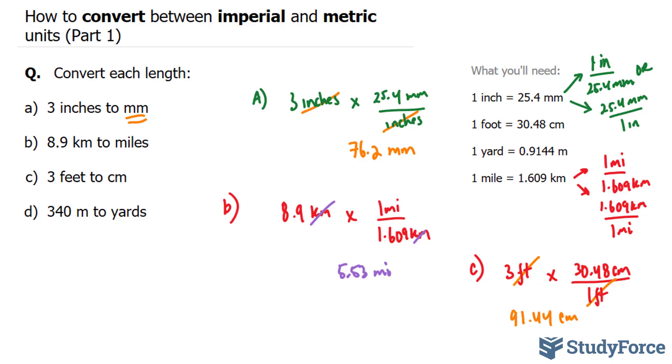Let's move on to D. In D, they want us to convert 340 meters to yards. To do that, we'll use this conversion ratio. Which version will you use? The one where you have the meters at the top or the meters at the bottom? The one with the meter at the bottom is the correct one. So I'm going to multiply this by 0.9144 meters at the bottom. And at the top, we have 1 yard.